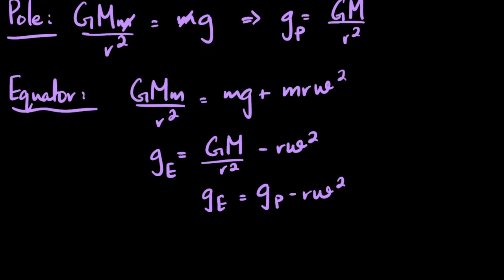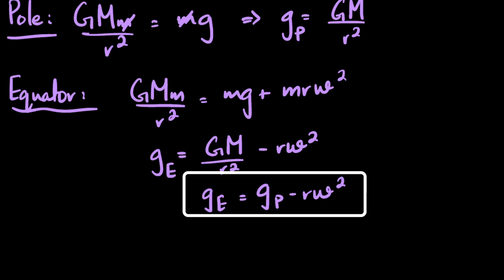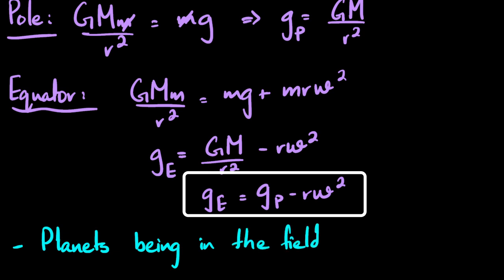This is not explicitly on the syllabus but has been asked repeatedly in numerical questions, so it's good to know. The third reason why the calculated and actual gravitational field strength may differ is that planets are in the gravitational field of other planets or bodies. Those other gravitational field strengths either add or subtract and change the true value.